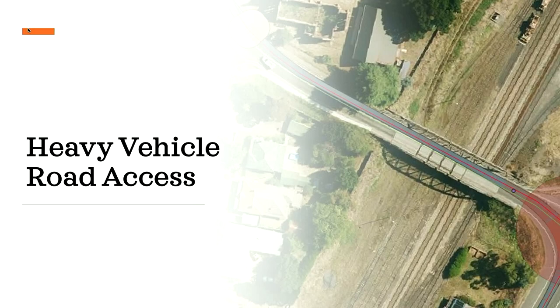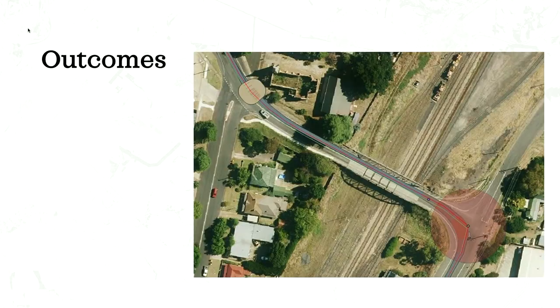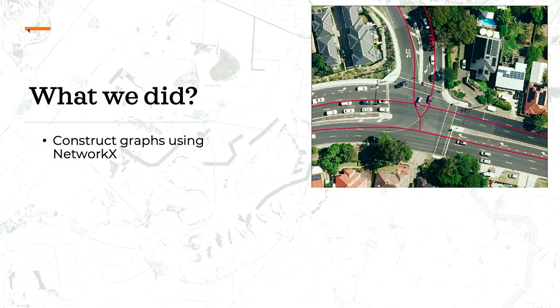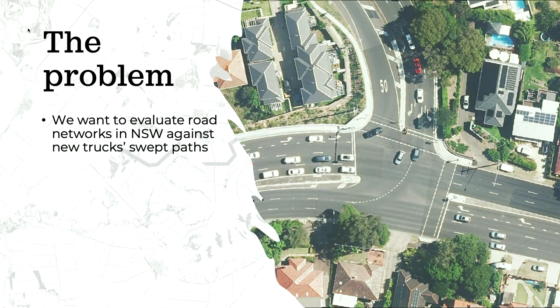Sometimes we don't want summarization measurements from our geospatial data — we instead want geospatial data as outputs, because we may want to visualize them on a map. The second project is Heavy Vehicle Road Access. The problem is to evaluate road networks in New South Wales against electric truck dimensions. The state of New South Wales wants to adopt electric trucks, but these are really large compared to original trucks — they are larger and longer to account for their batteries. As trucks turn, they create a large swept path — the total area traced out as they turn — and the client wants to understand if the road network is sufficient for these new vehicles.